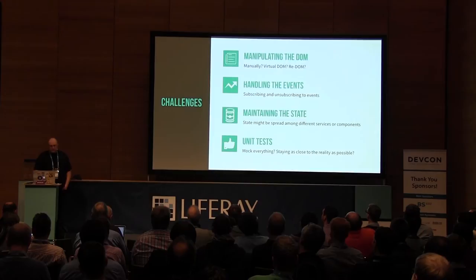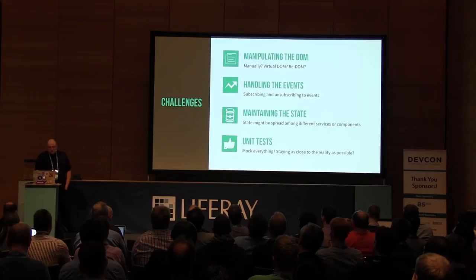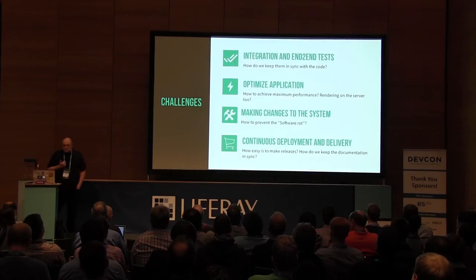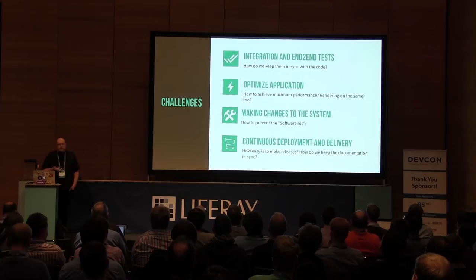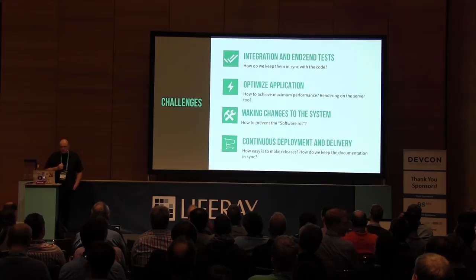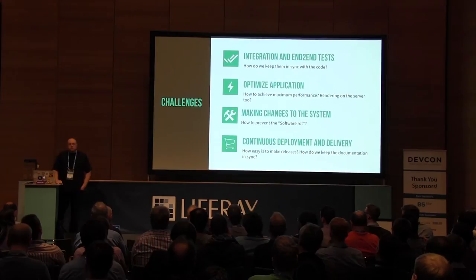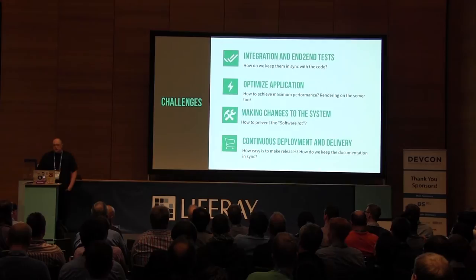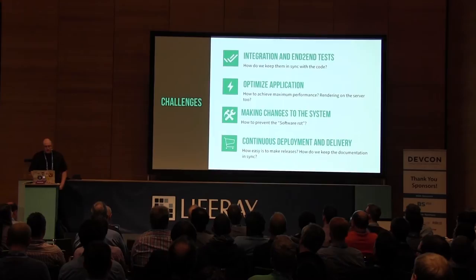How do we perform unit tests? Shall we mock everything, or should we stay as close as possible to reality? But then we have integration and end-to-end tests, so how do we keep them in sync? How do we optimize the application? Shall we render on the server? Shall we bundle all the files together? What about HTTP 1, HTTP 2? How do we make changes to the system and how do we prevent software rot — when it's so hard for the developer to make a change that he pushes it back and the software is left to die? How do we do continuous deployment and delivery? How easy is it to make releases? And finally, how do we keep the documentation in sync?